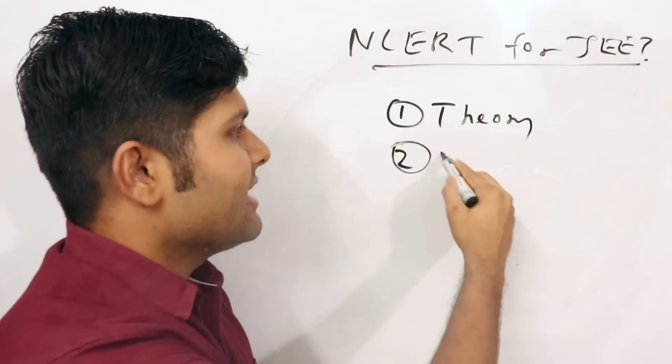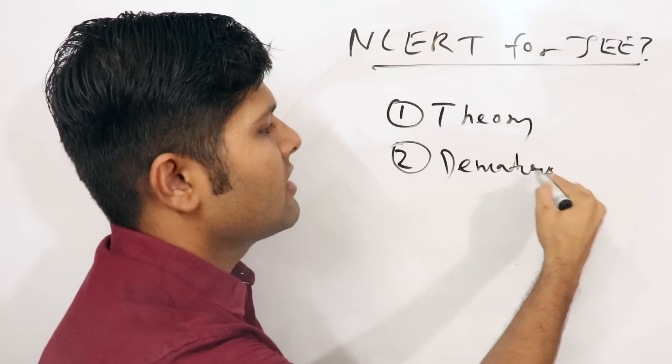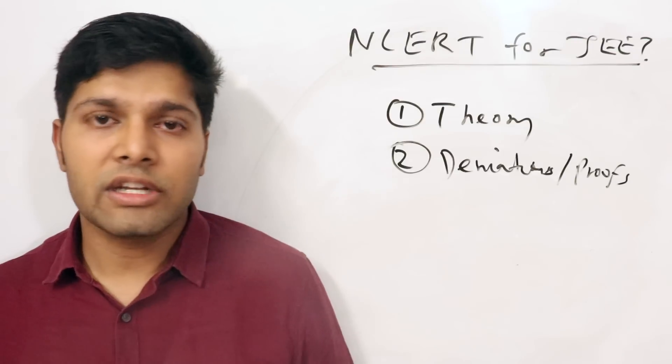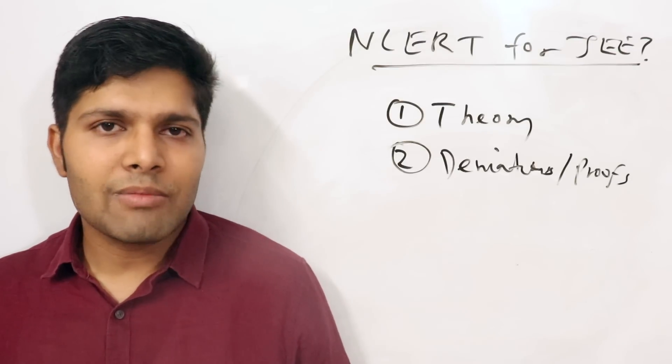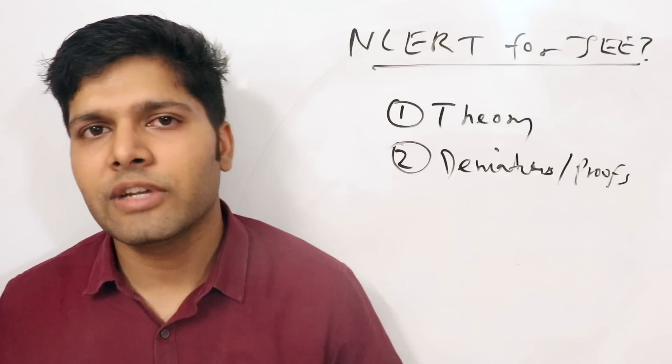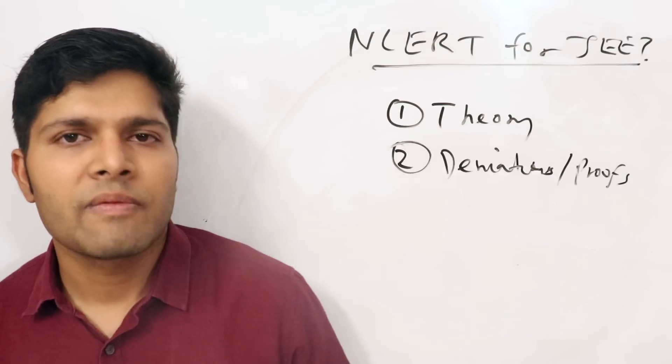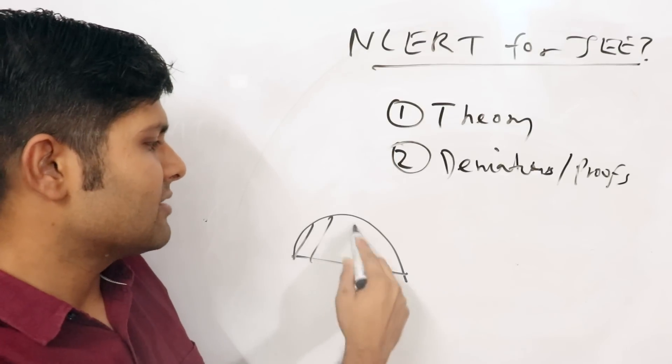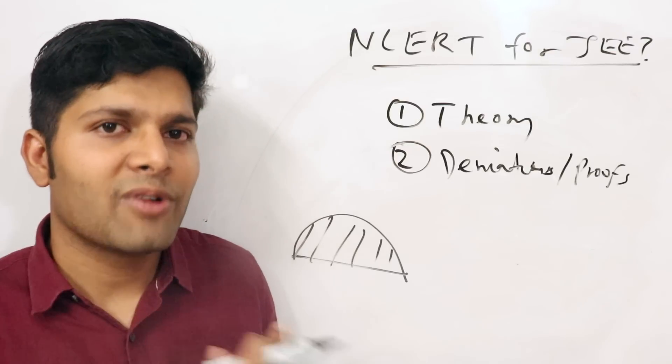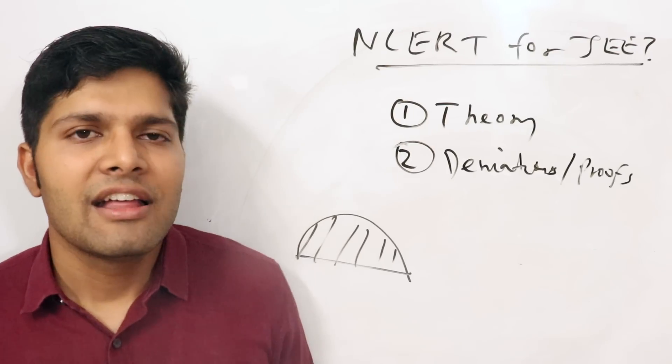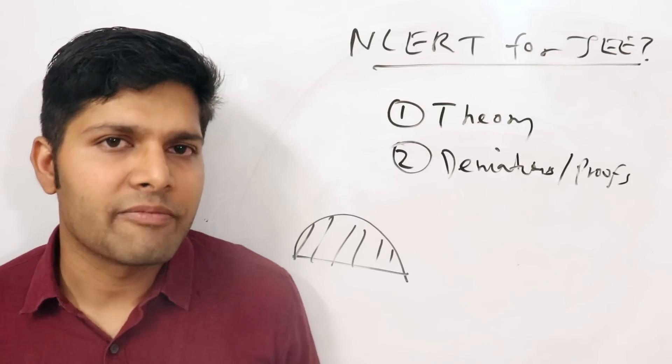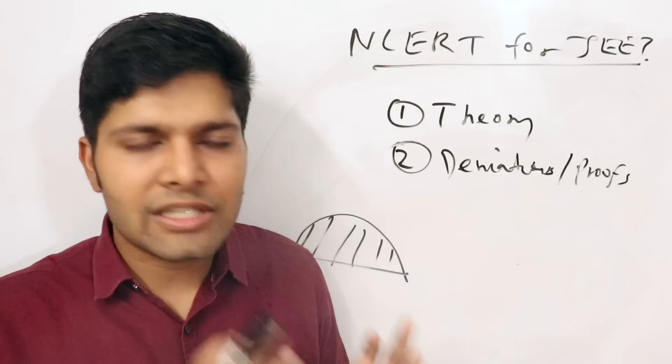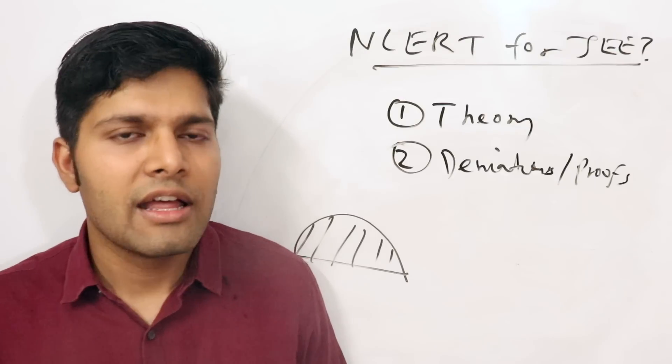The second portion of NCERT is the derivations and proofs. These are mostly relevant in three sections: first is organic chemistry where you will see mechanisms, second is in mathematics, and third is in physics. Now I'll admit not every derivation is done in NCERT textbook. For example, in physics you must have done this particular derivation, what's the center of mass of semicircular ring, center of mass of semicircular disk, you must have done these things in physics. So these derivations are probably not there in NCERT, but I can promise you this much: if there is a derivation in NCERT you must memorize it fully. You must know in and out of it.